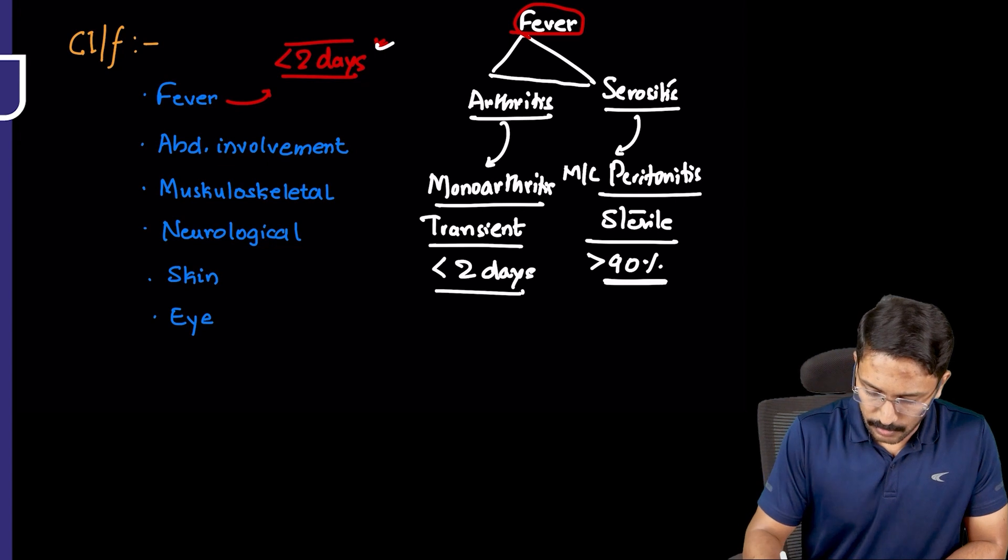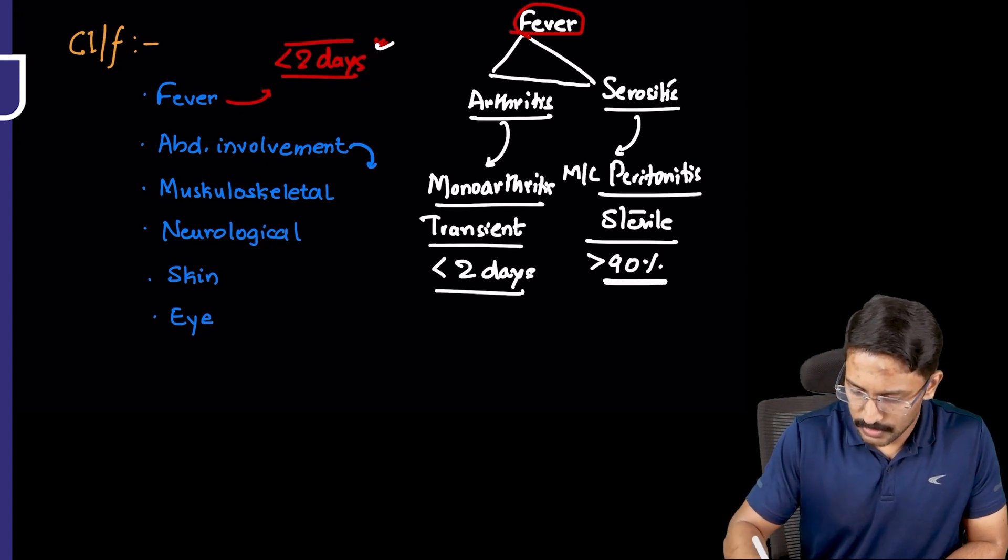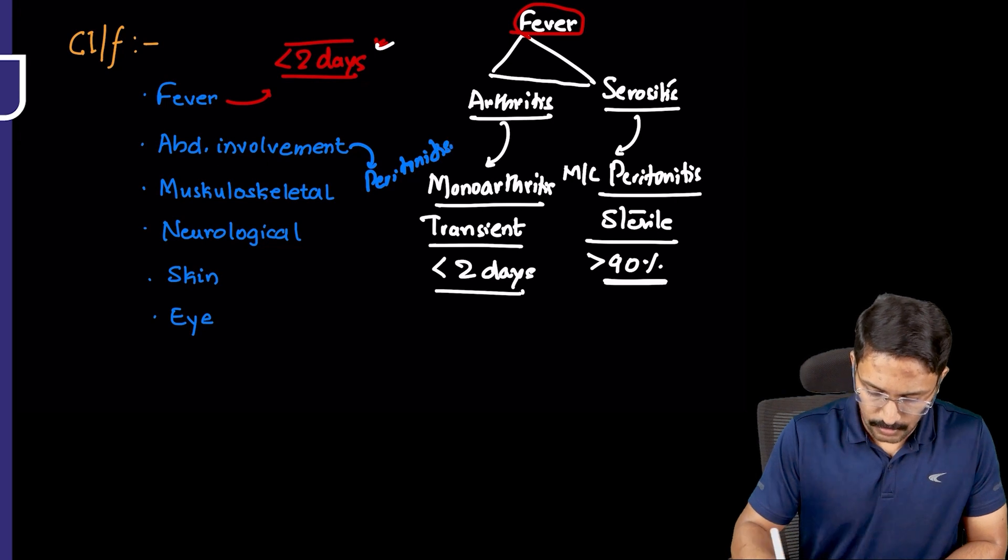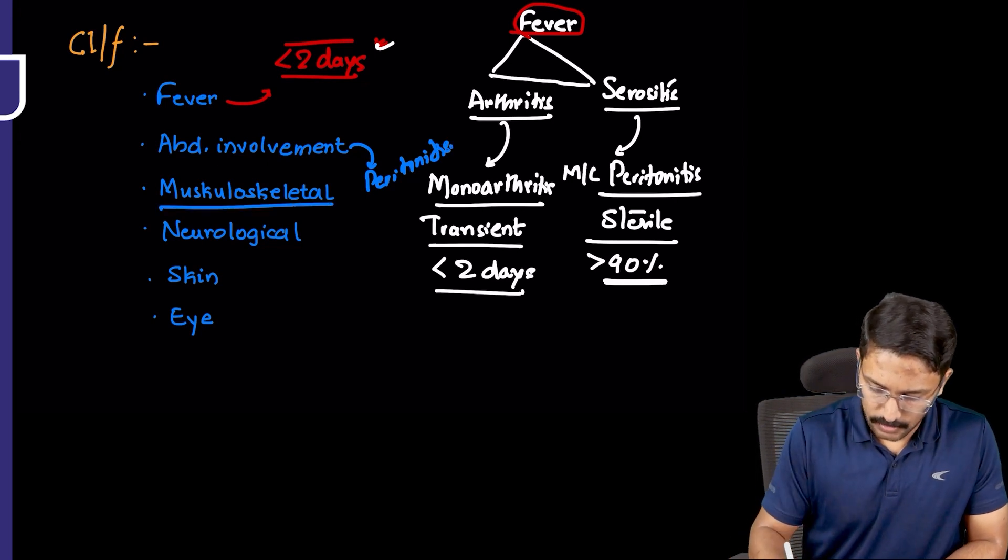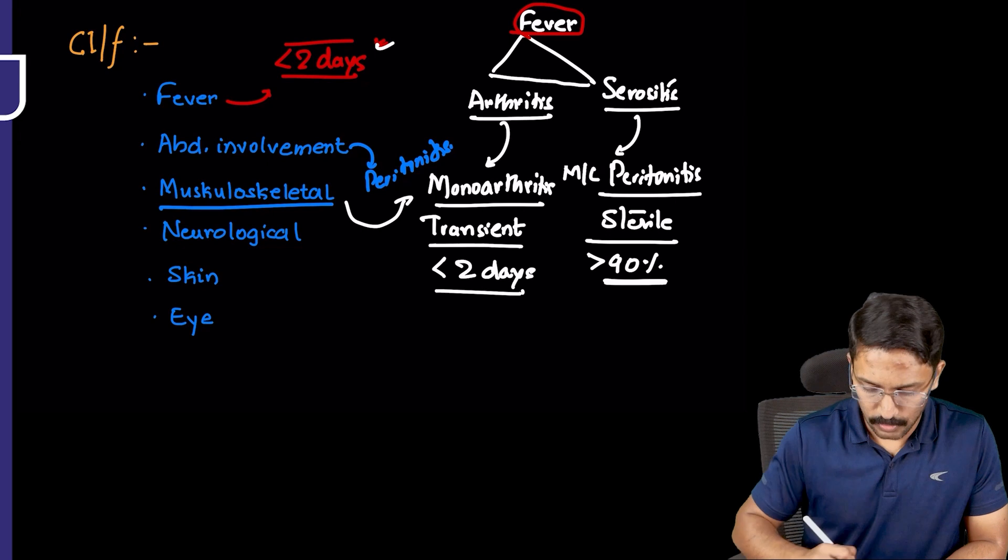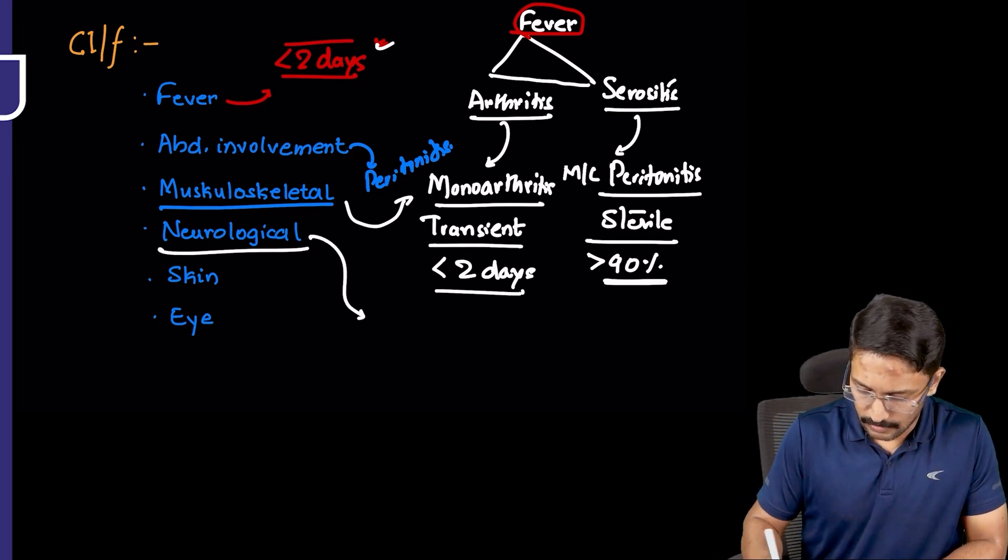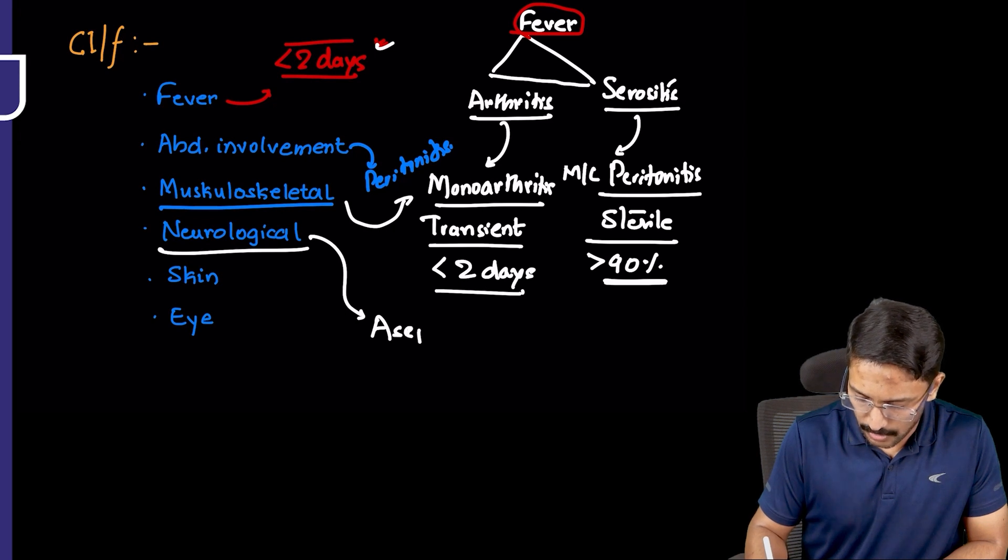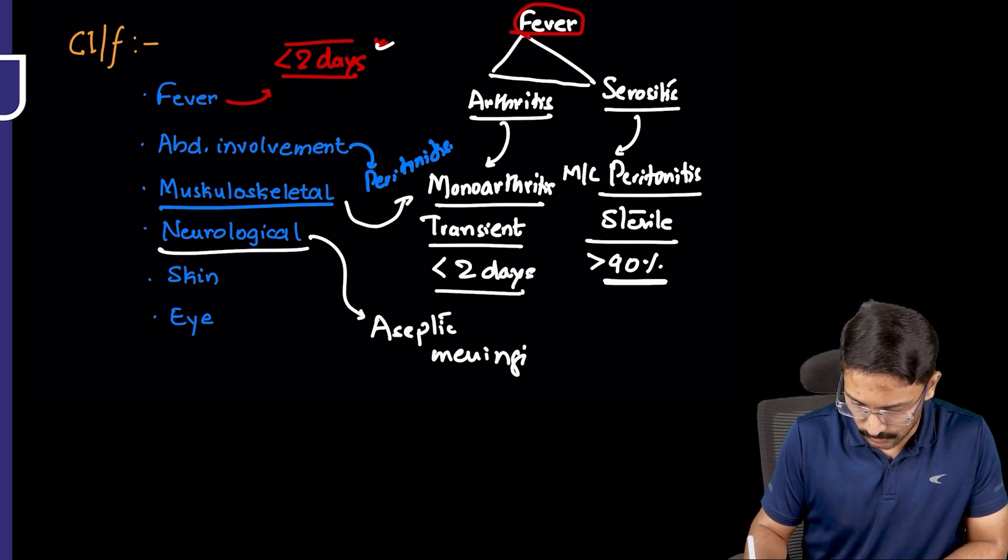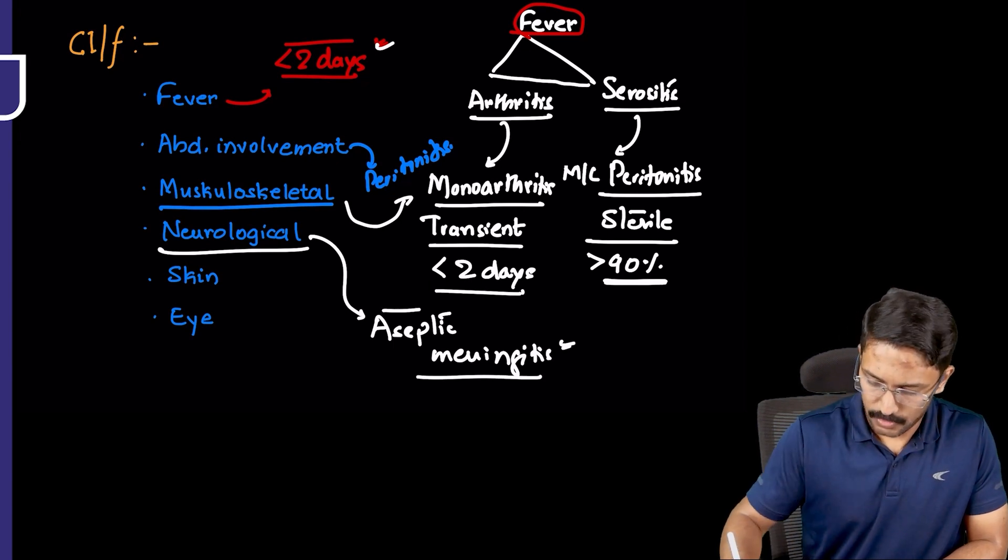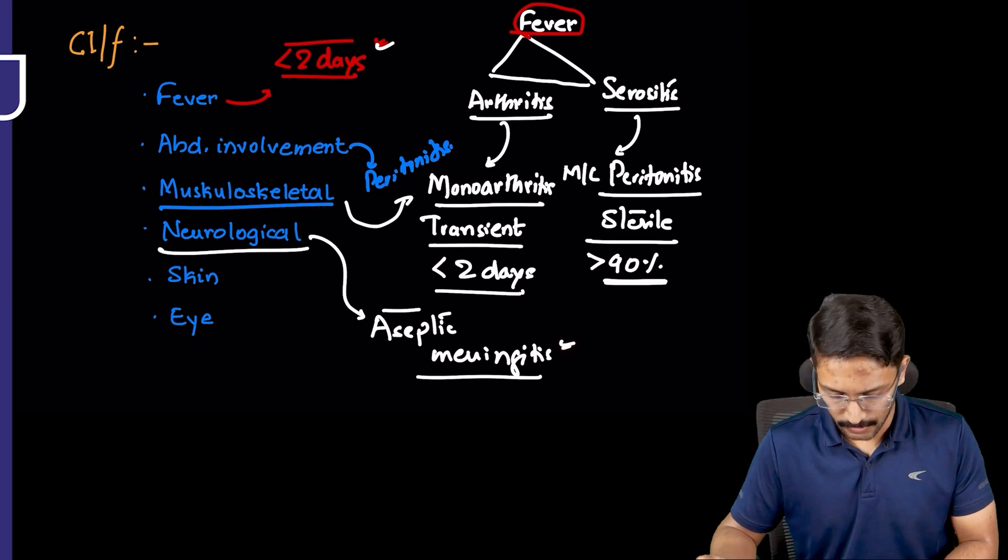Abdominal involvement is obviously in the form of peritonitis, which we have already discussed. Musculoskeletal symptom-wise will be monoarthritis which is transient. Neurologically, some of these patients might develop aseptic meningitis as part of serositis. They might have signs of meningitis or meningeal irritation. If you do CSF culture, it will turn out to be negative.